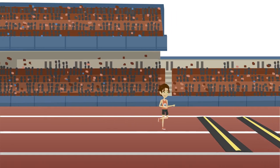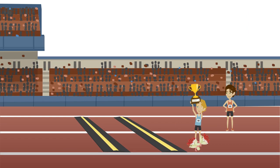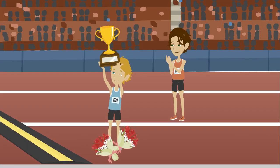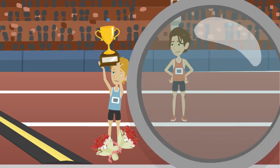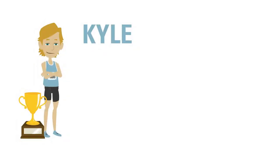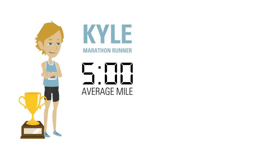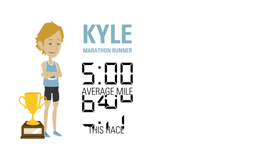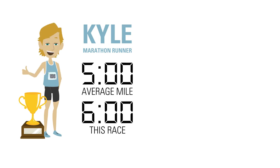Kyle crosses the finish line well ahead of Adam. So in terms of pure achievement, he wins the race. But look closer at each of these runners. Kyle's a marathon runner who normally runs a five-minute mile. This time, however, it took him six minutes. That means Kyle did well, but he didn't do as well as he was expected to do.